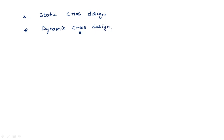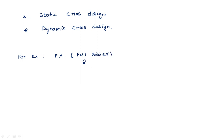What is the difference between static and dynamic CMOS design? For example, consider a full adder. A full adder adds three input bits — A, B, and Cin — and gives two outputs: sum and carry out. Whether this full adder is a static CMOS design or dynamic CMOS design completely depends upon the type of input we are applying.